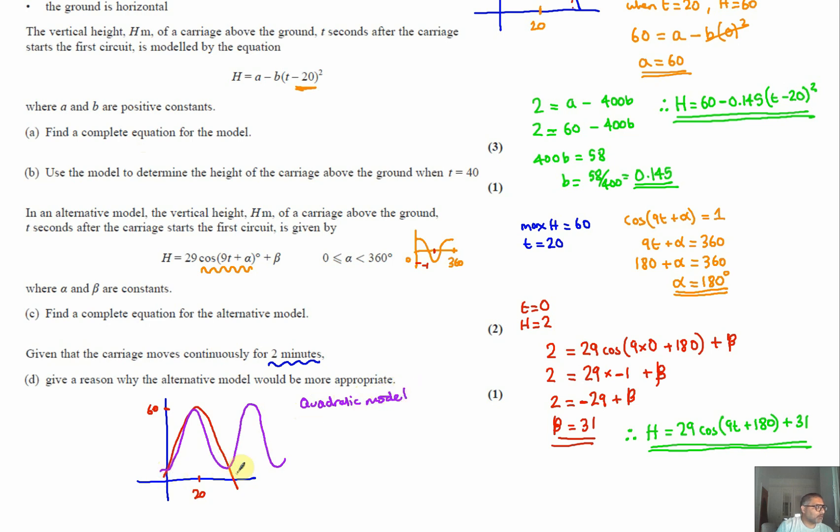...will only be valid from 0 to 40 seconds because of the symmetry of the graph there, that point there will be 40. It's only valid from t equals 0 to t equals 40, whereas the cosine model is valid for multiple circuits.